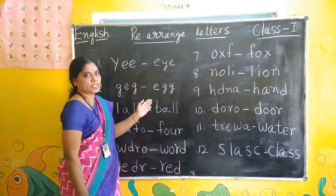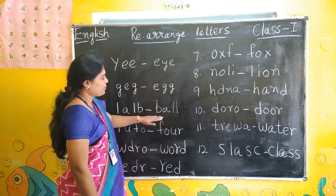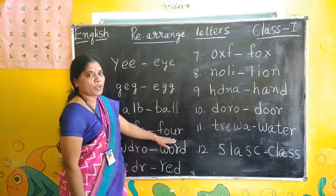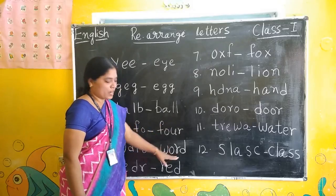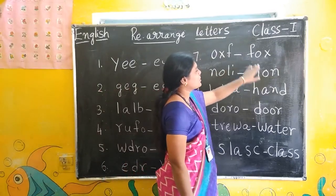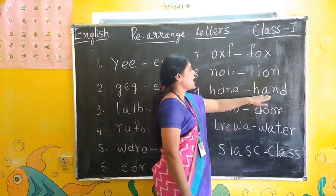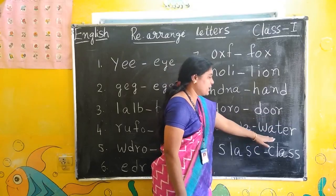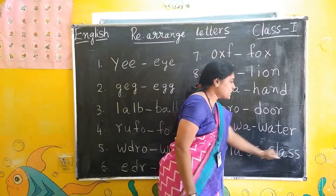Once read these words: E, Y, E, I — Eye. E, G, G, N — Egg. D, A, L, L — All. S, O, U, R — Four. W, O, R — Word. R, E, D — Red. S, O, X — Fox. L, I, O — Lion. H, A, N — Hand. D, O, O, R — Door. W, A, T, E, R — Water. C, L, A, S, S — Class.